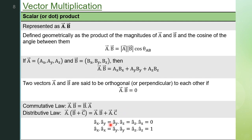Considering unit vectors ax-cap, ay-cap, and az-cap, each has magnitude 1. The dot product between two different unit vectors, such as ax-cap · ay-cap, gives cos 90° = 0, since x and y are perpendicular. So the dot product between any two different unit vectors is zero. If you take the dot product of a unit vector with itself, such as ax-cap · ax-cap, the angle is 0°, so cos 0° = 1. The dot product of two identical unit vectors equals 1.